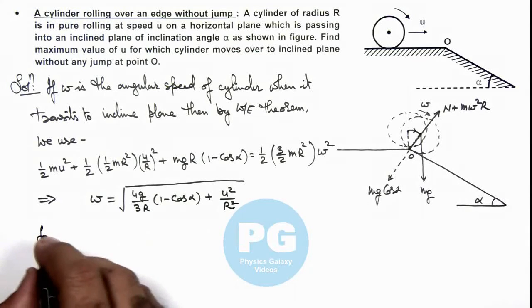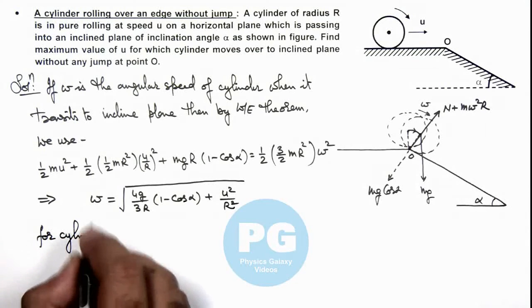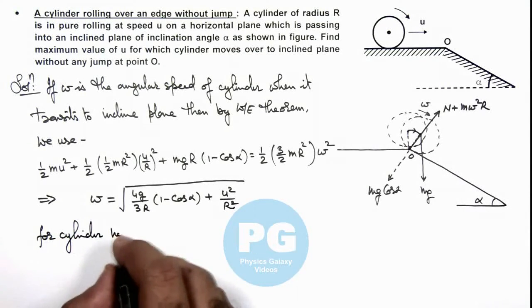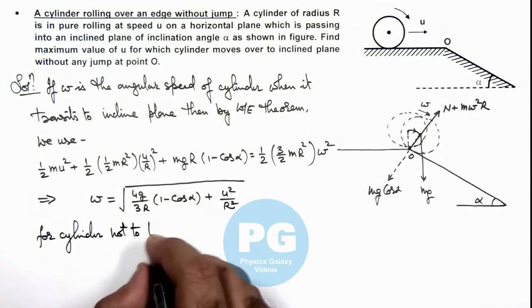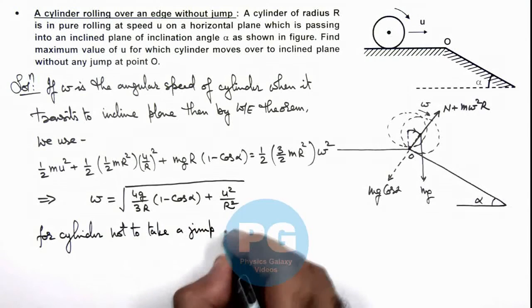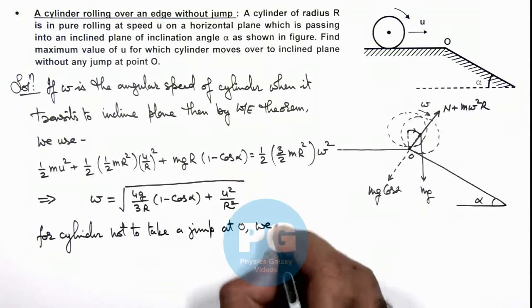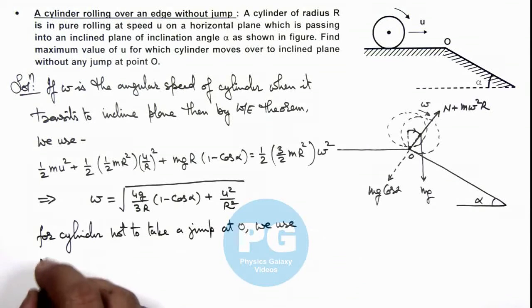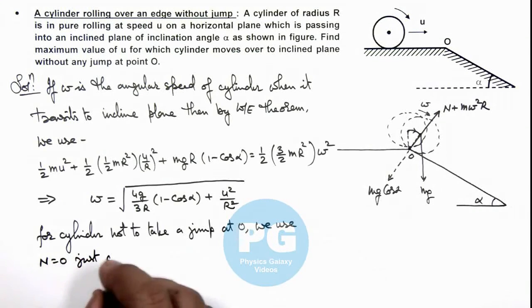So in this situation, we can say for the cylinder not to take a jump at O, here we use N equals zero just at this point.